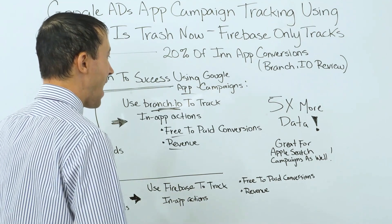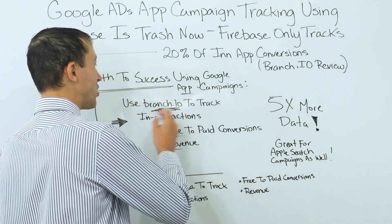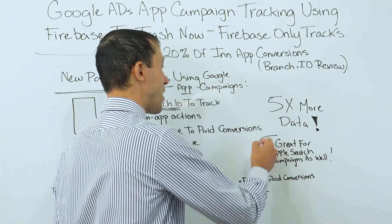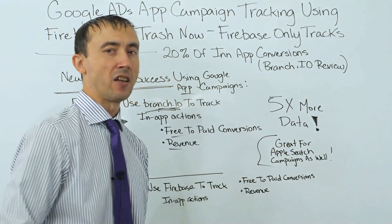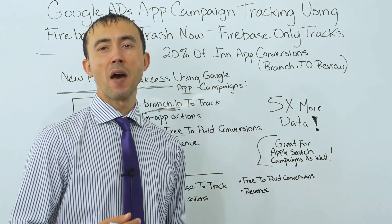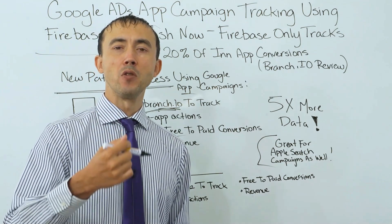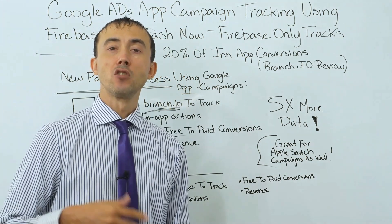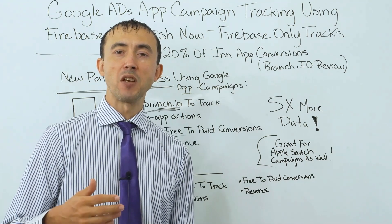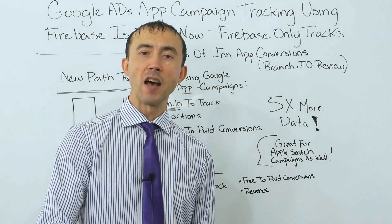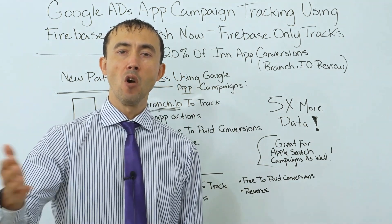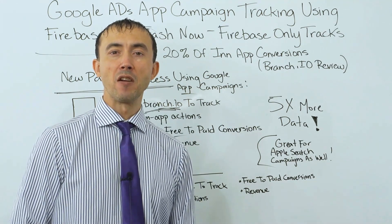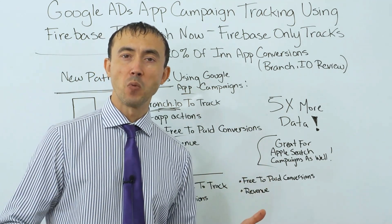If you use branch.io, it actually has a bunch of other cool features, including great support for search campaign tracking as well. I would recommend doing both: Google Ads app campaigns and Apple Search Ads campaigns. Start with Apple Search Ads campaigns first, because you're going to get a better return sooner in the process since you have more manual control over where your ad shows up. And with that, you can target people that are downloading your competitor's app, which is what you want.